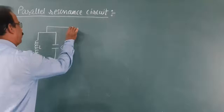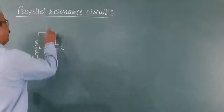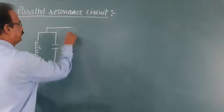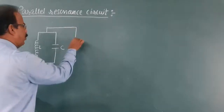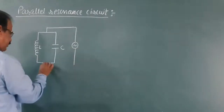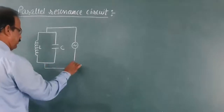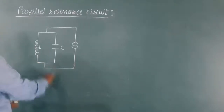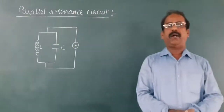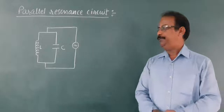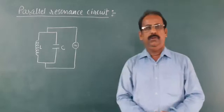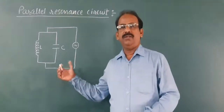Across this parallel combination of inductor and capacitor, a source of alternating EMF is connected. Alternating EMF is applied across the parallel combination of inductor and capacitor. This is the parallel resonance circuit.